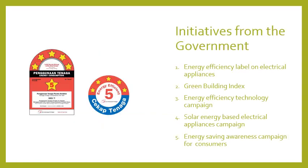There are some initiatives from the government to help in energy efficiency. First, the energy efficiency label, which can be found on electrical appliances such as refrigerators, air conditioners, and so on. Second, the Green Building Index, which buildings wanting to use the green energy concept must follow. Third, energy efficiency technology campaigns, solar energy-based electrical appliances campaigns, and energy saving campaigns for consumers, which you can see on television, through the media, social media, and so on.